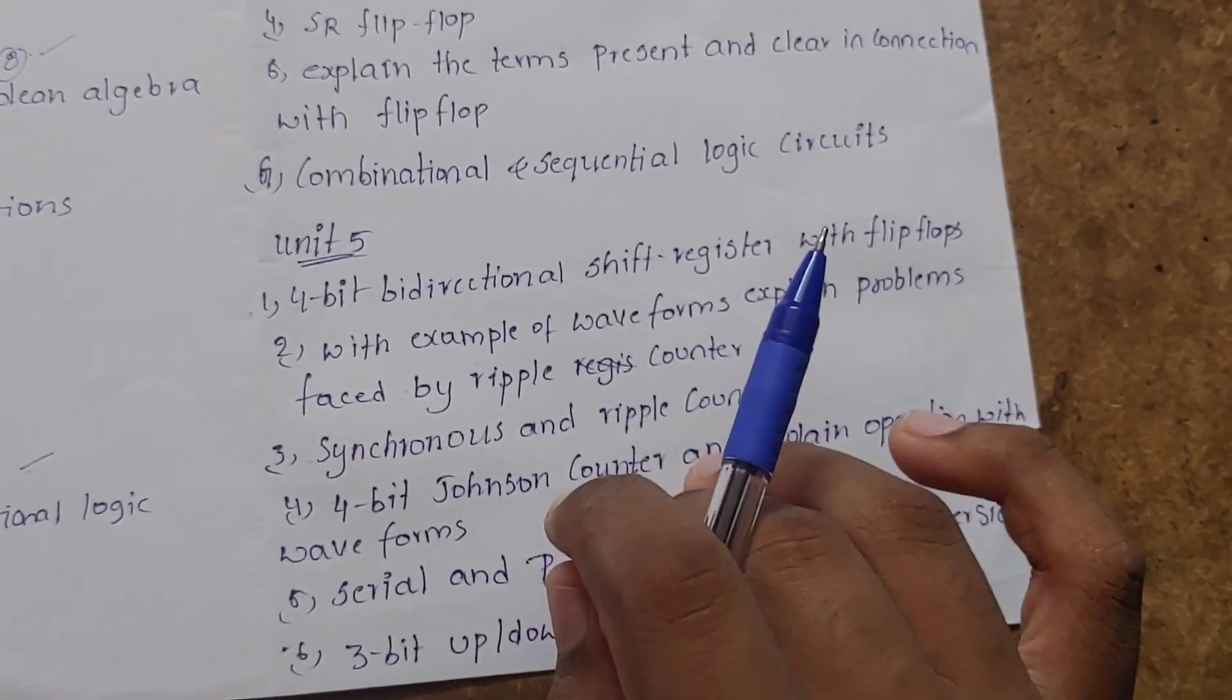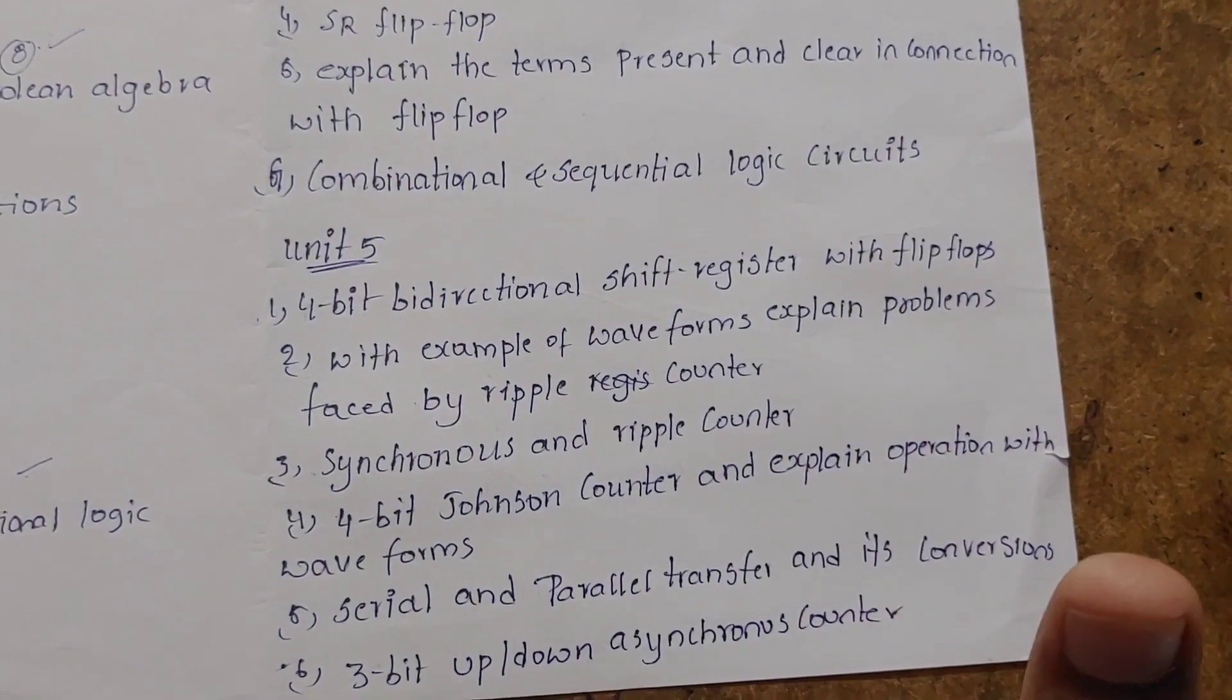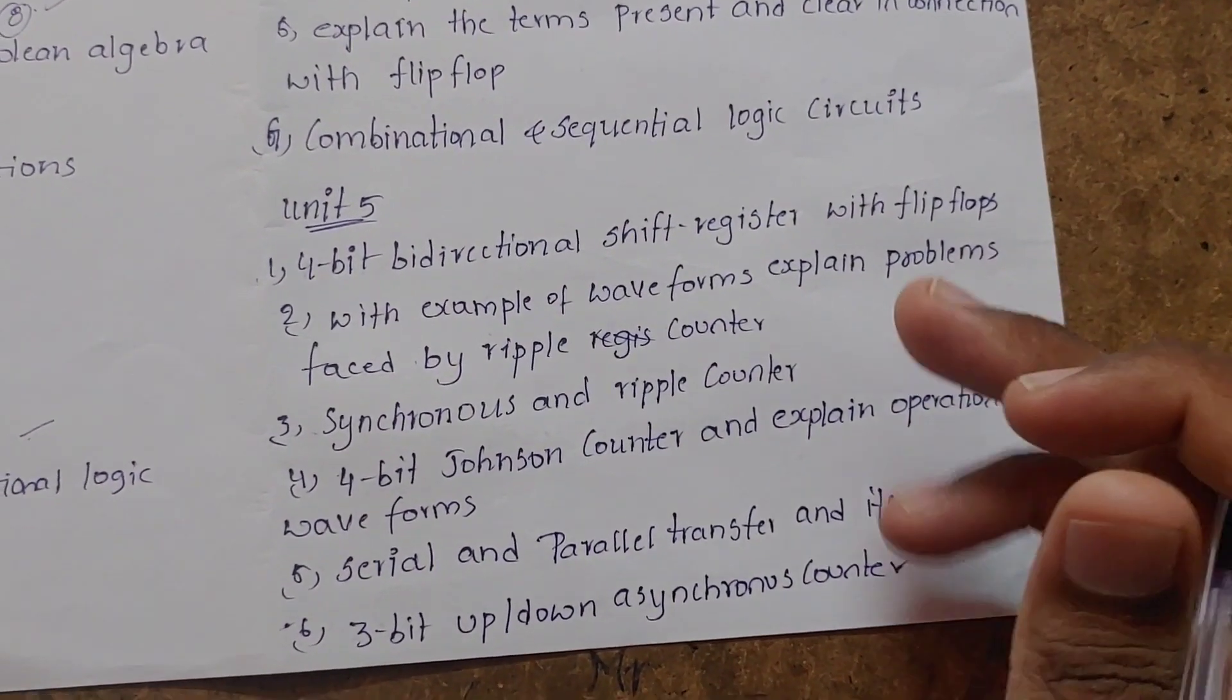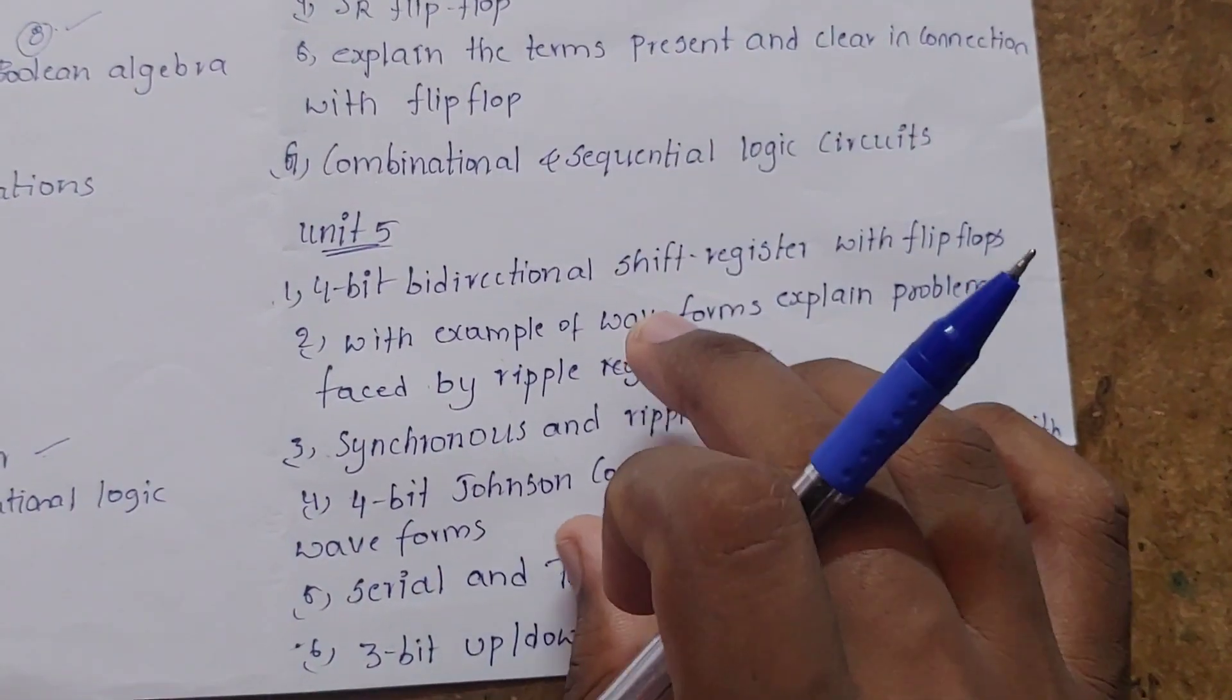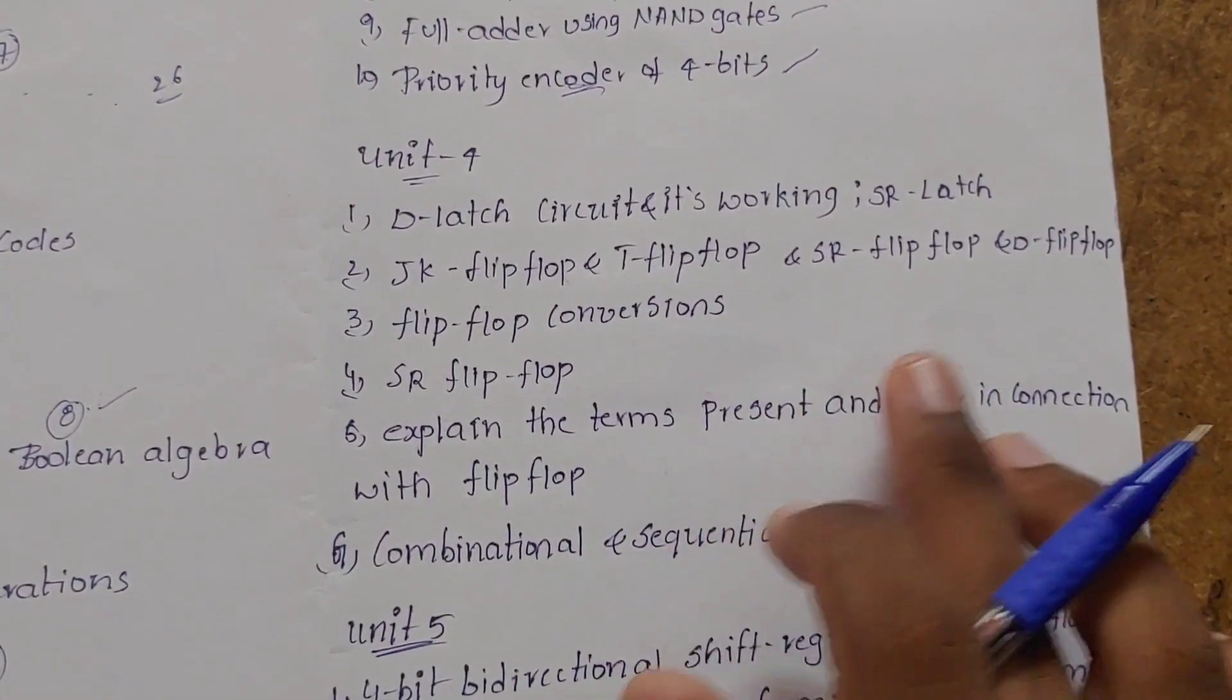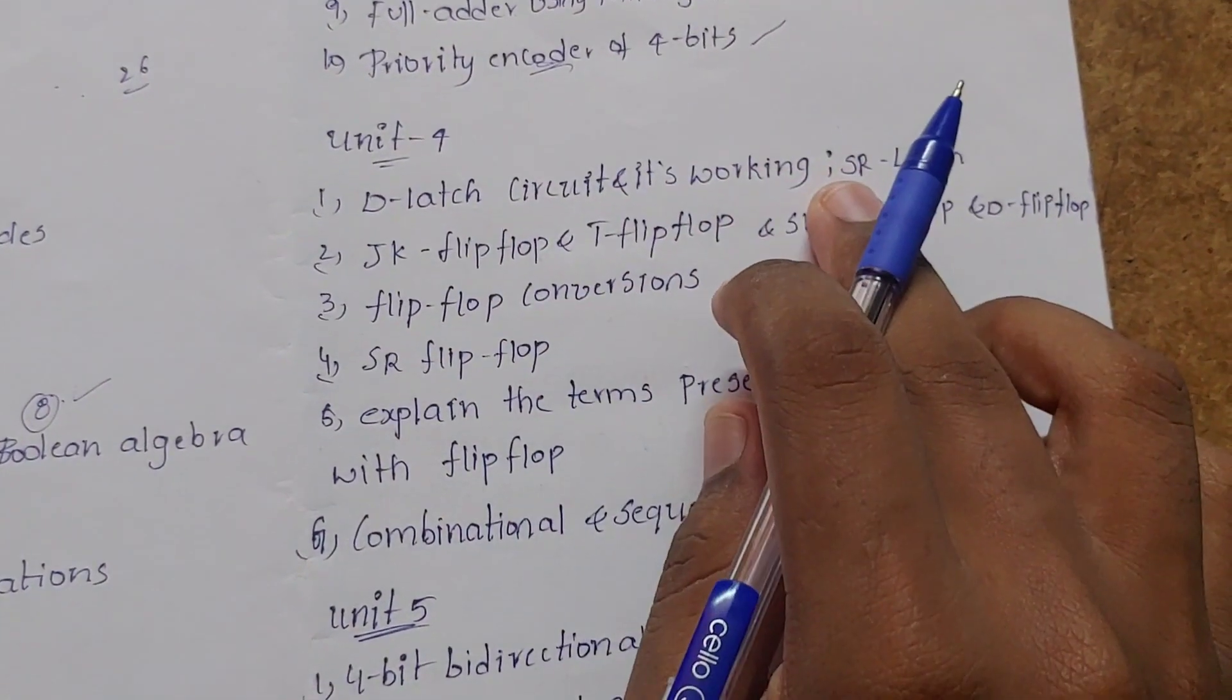Unit 4 is easy. There are the D-latch circuits and its working, and S-latch and its working. D-latch and S-latch.